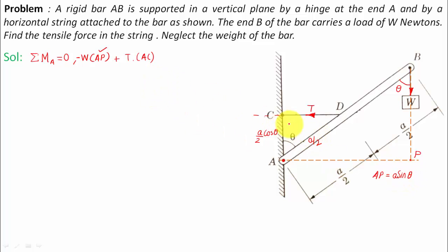So what I'm going to be doing is putting all these values over here. Let's see what happens, and everything shall be equal to 0. So: negative W into AP—what's AP? a sin θ—plus T multiplied by AC—what's AC? (a/2) cos θ—is equal to 0.